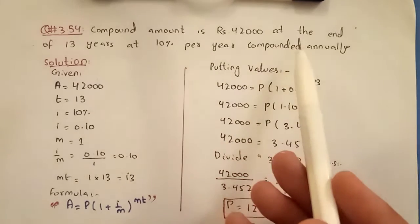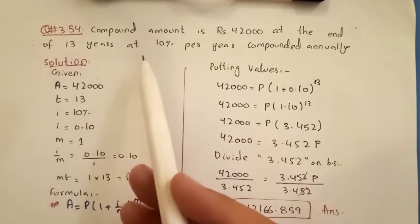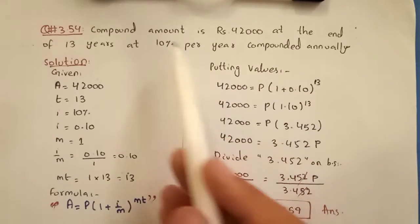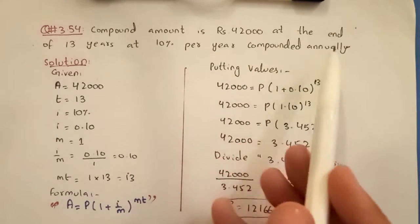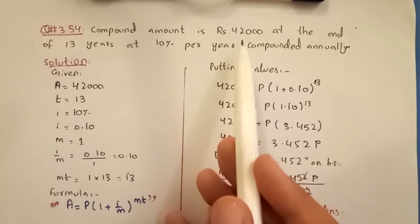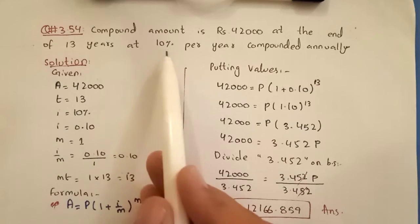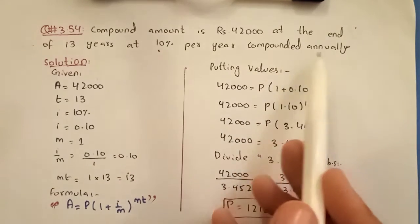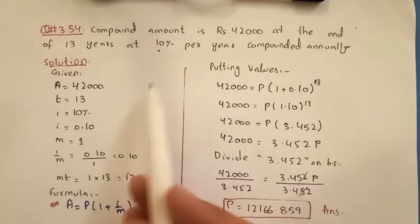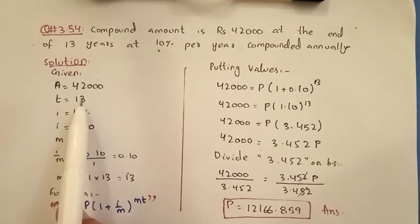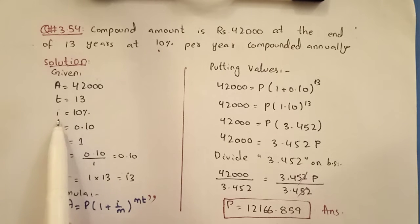The compound amount is Rs.42,000 at the end of 13 years at 10% per year compounded annually. So the given values are: compound amount A is Rs.42,000, time T is 13 years, rate is 10%, and compounded annually means M equals 1. We need to find the present value.